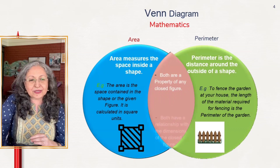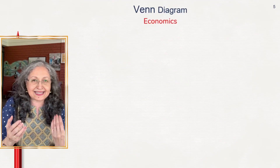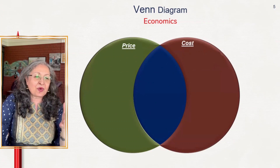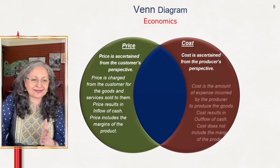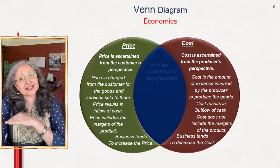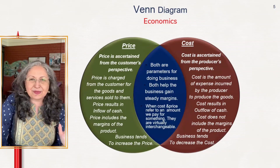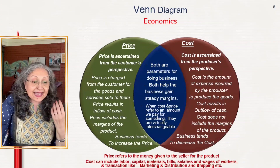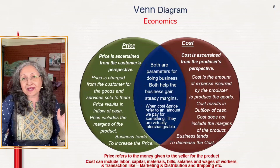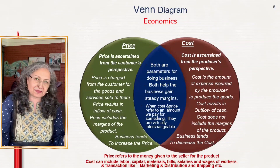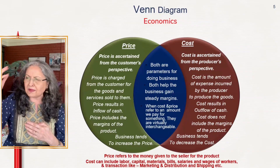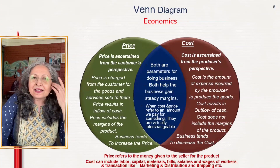Moving on to economics: cost and price are interchangeably used words in daily language, and therefore there's a lot of confusion. In economics these are two distinct ideas, and a Venn diagram will help clarify that. Parallel comparisons must always go on: price is charged from the customer; cost is the amount of expense. Price results in inflow of cash; cost results in outflow of cash. Then map the similarities — both are parameters for doing business, both help in determining margins. Always have a bottom line: price refers to the money given to the product; cost includes labor, materials, bills, and salaries.